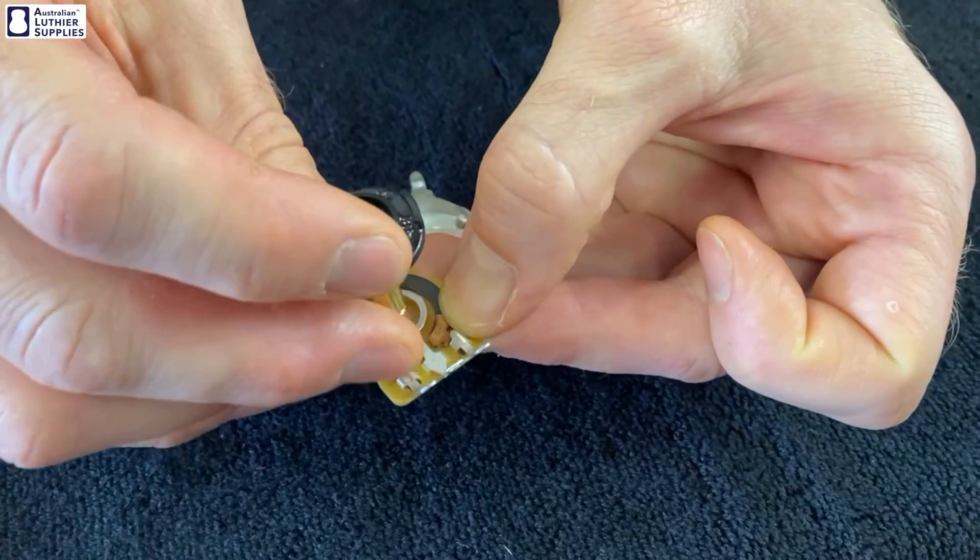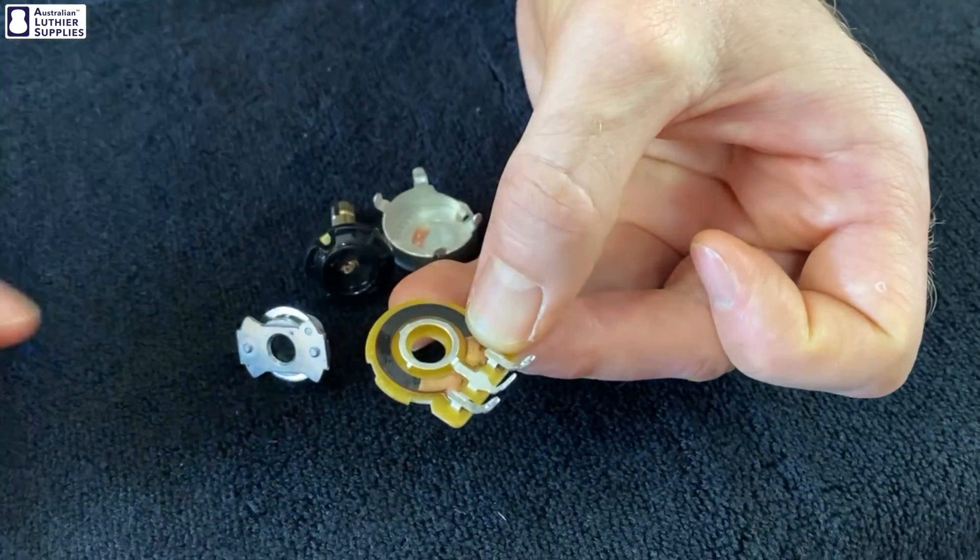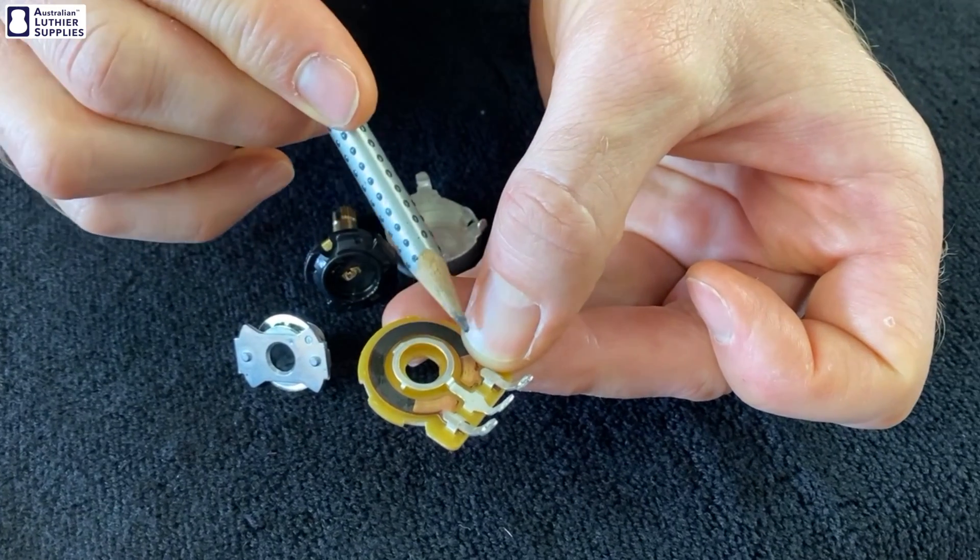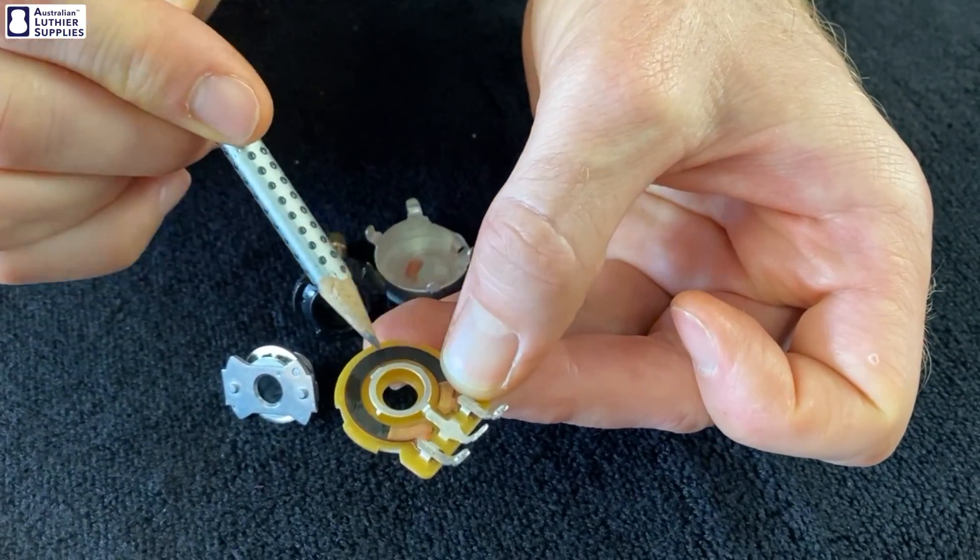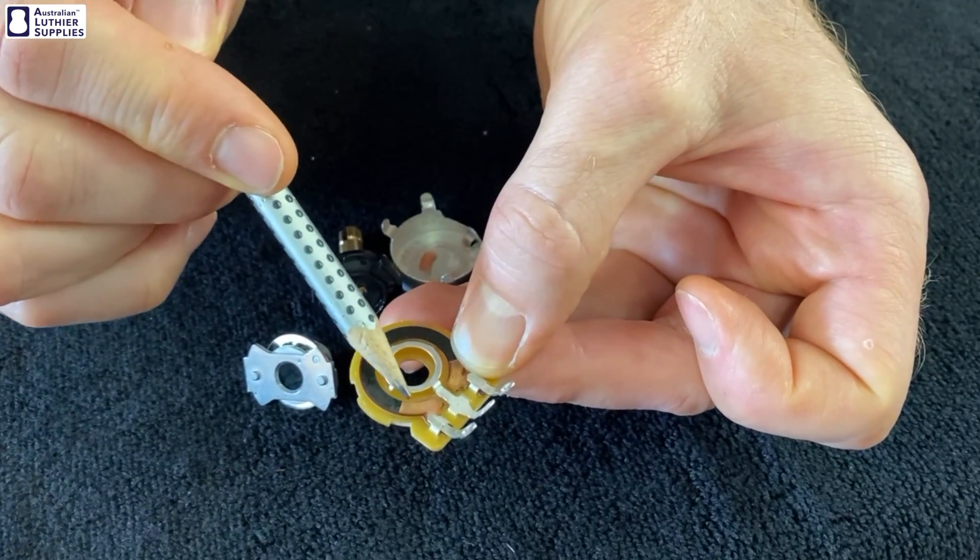But then when you turn the pot all the way around the other way, the wiper will be closer to this lug and more signal will get out of that lug. Less signal can get out of this lug because of the resistance that it needs to travel from this point across and through the carbon and out of that one.